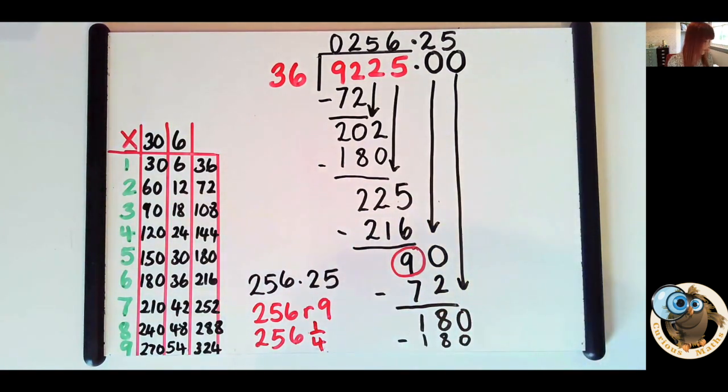And actually, in year five and six, we expect children to know that a quarter is equivalent to 0.25. So it might well be that they could quite quickly tell you, well, if it's 256 and a quarter, I know what the decimal representation is. I don't need to write that out.